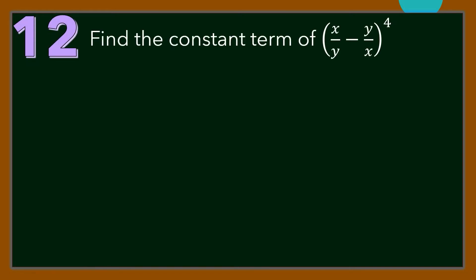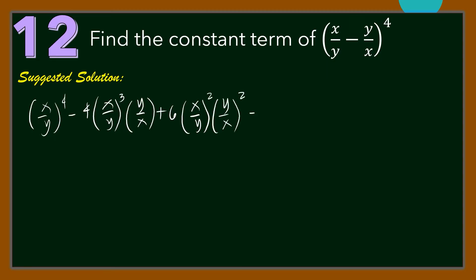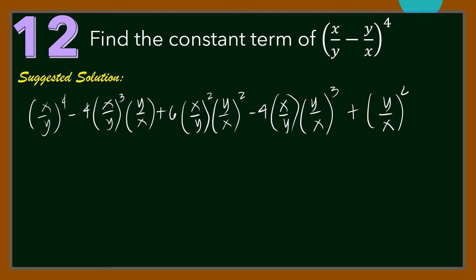Number 12. Find the constant term of the expansion (x/y − y/x)⁴. For our suggested solution, let us write the expansion of the given binomial since it only has 5 terms. We have (x/y)⁴ minus 4(x/y)³(y/x) plus 6(x/y)²(y/x)² minus 4(x/y)(y/x)³ plus (y/x)⁴. These are the 5 terms in the expansion.